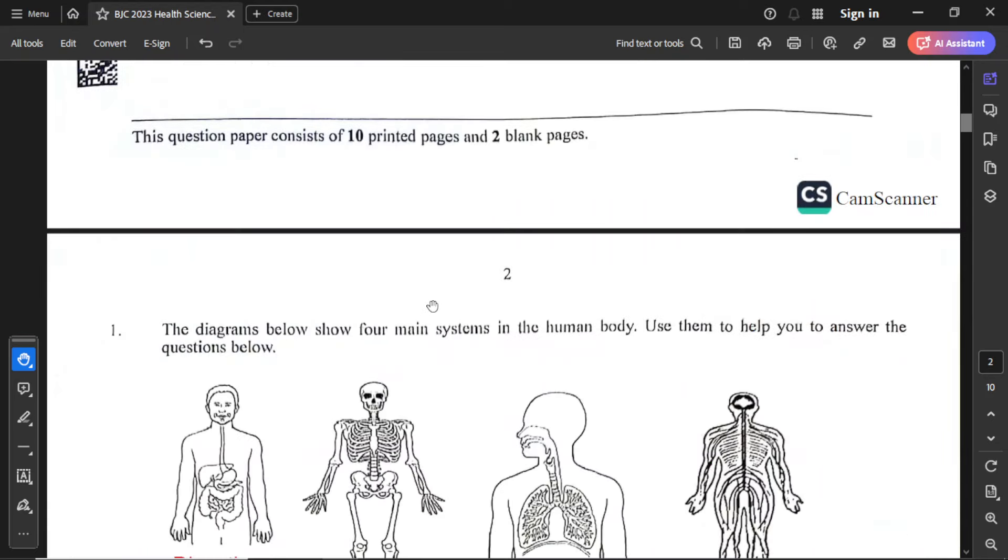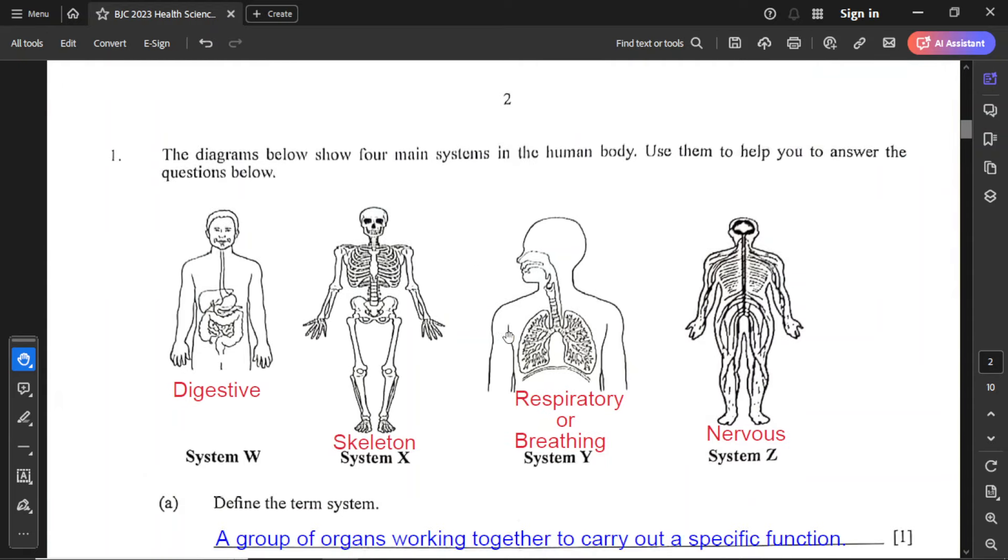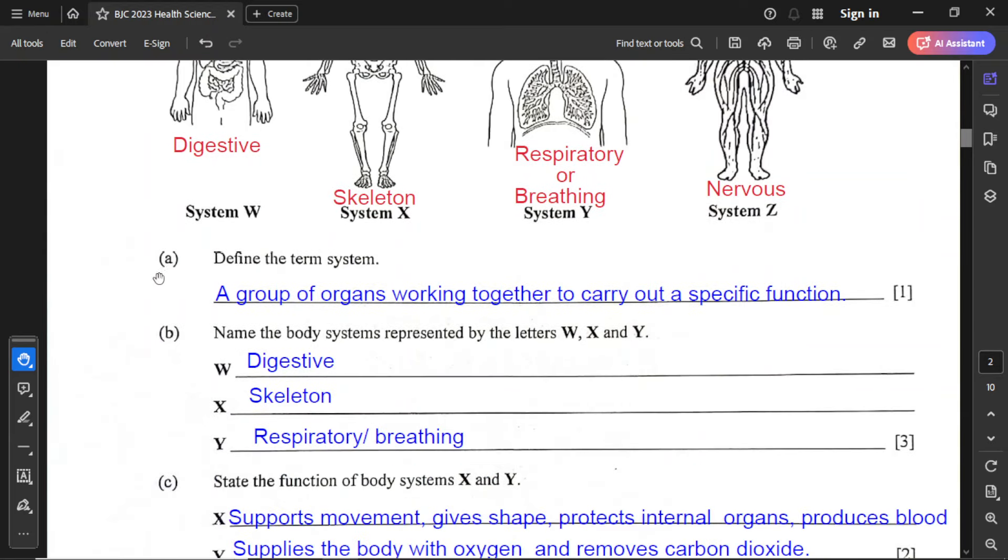Let us jump into question number 1. The diagram below shows four main systems in the human body. Use them to help you answer the questions below. I have already labeled these systems: W is the digestive system, X is the skeleton system, Y is the breathing or respiratory system, and Z is the nervous system. The first part asks us to define the term system. A system is a group of organs working together to carry out a specific function.